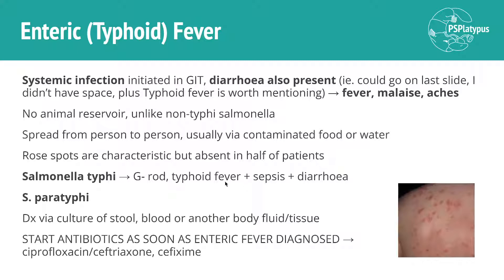It's very dangerous — sepsis can be fatal, diarrhea can be fatal, and fever as well. We diagnose via culture — a stool sample, a blood sample, or another body fluid or tissue. You need to start antibiotics as soon as you've diagnosed enteric fever, and there are some examples of antibiotics that you can use.